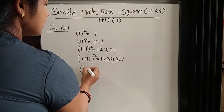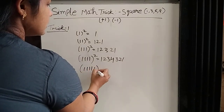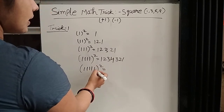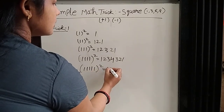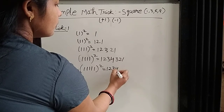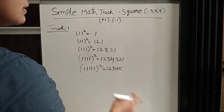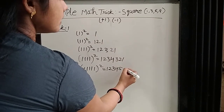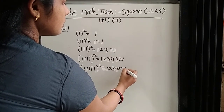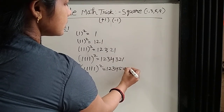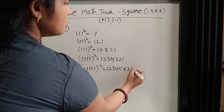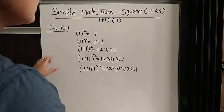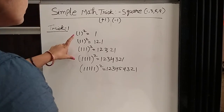Suppose there are five 1s. Then count again: five 1s, so write 1, 2, 3, 4, 5. Then plus 1, minus 1, next minus 1: 5 minus 1 is 4, 4 minus 1 is 3, 3 minus 1 is 2, 2 minus 1 is 1. So we can find the square value of repeated 1s.